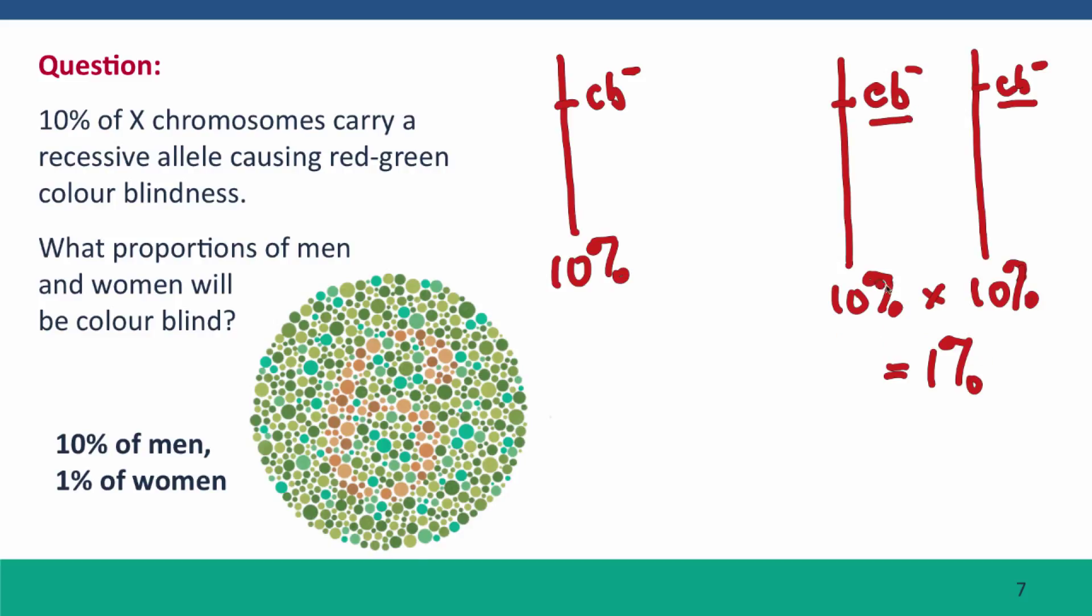And 9% of them will be heterozygous. Actually, no, 18% of them will be heterozygous for the colorblindness allele. Well, you'll learn to do these calculations later in the course, but 1% you should be able to calculate now.